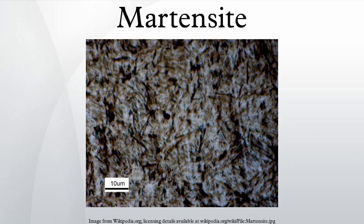Thus, martensite can be thermally induced or stress induced. One of the differences between the two phases is that martensite has a body-centered tetragonal crystal structure, whereas austenite has a face-centered cubic structure. The transition between these two structures requires very little thermal activation energy because it is a diffusionless transformation, which results in the subtle but rapid rearrangement of atomic positions, and has been known to occur even at cryogenic temperatures.